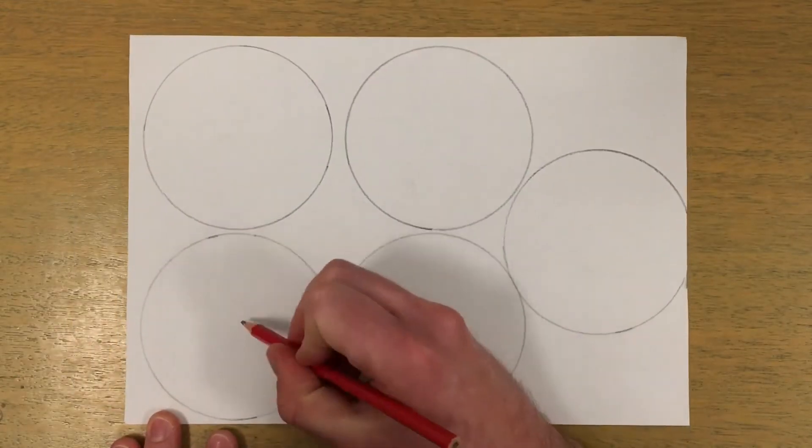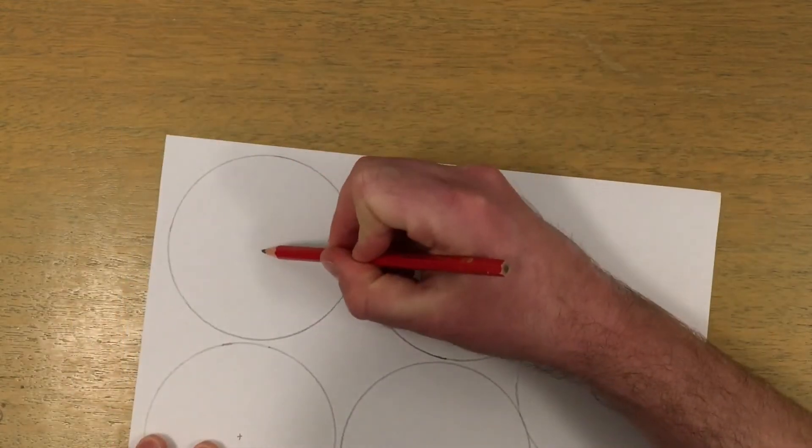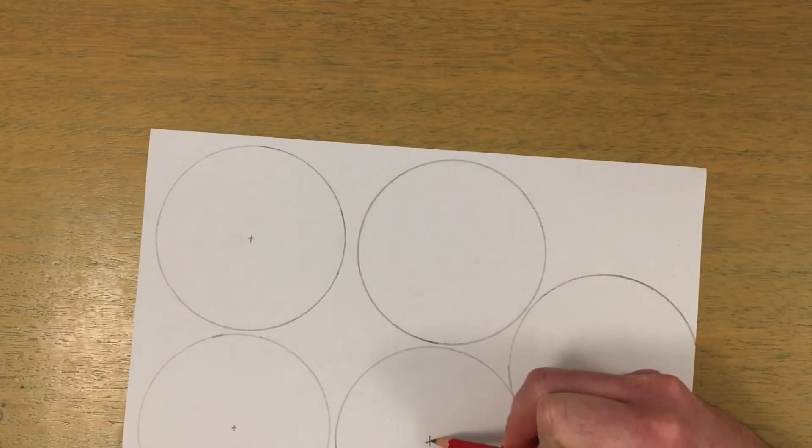Carefully mark the compass point in the centre of the circle, or mark first before drawing each circle.